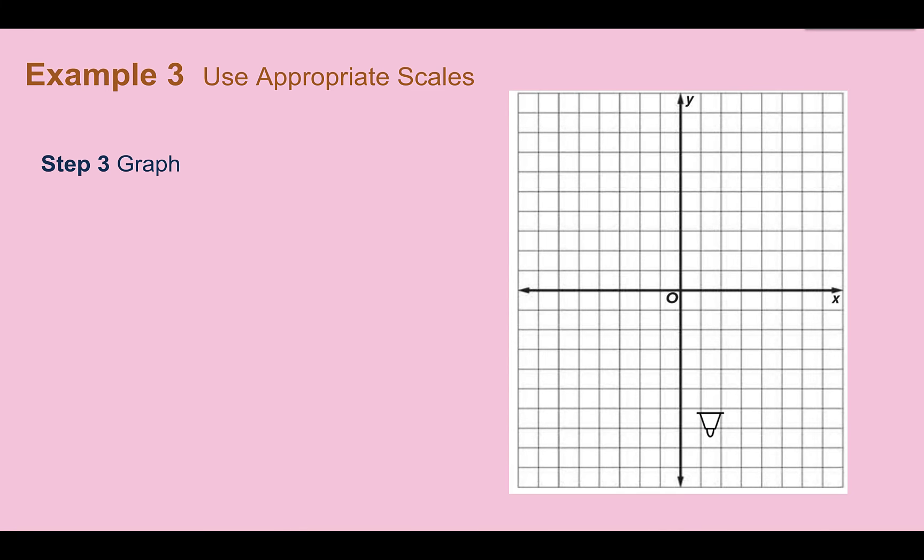Our next step is to graph. So now that we have decided on our scales, let's label. Here I'm labeling every other as long as I know that I'm counting by 5s left and right. And I'm going to label every other counting by 10s going up. If you want to label every line, feel free to do so. But labeling every other line gets the same point across.